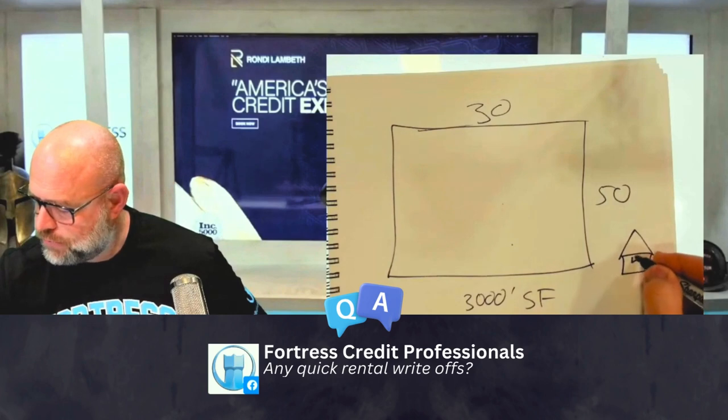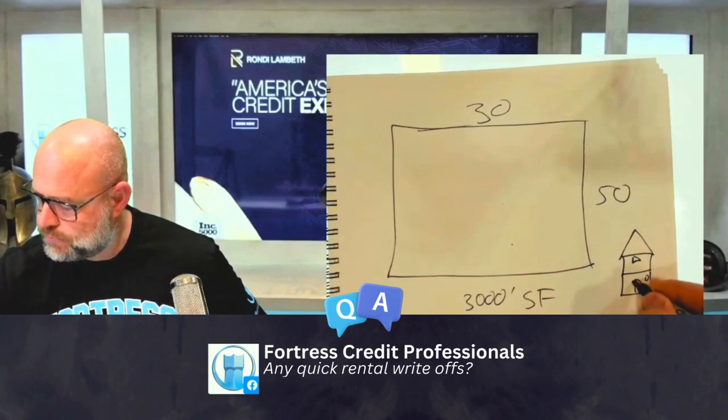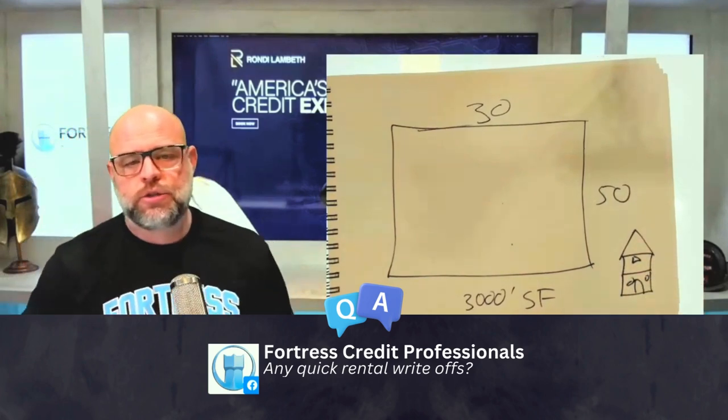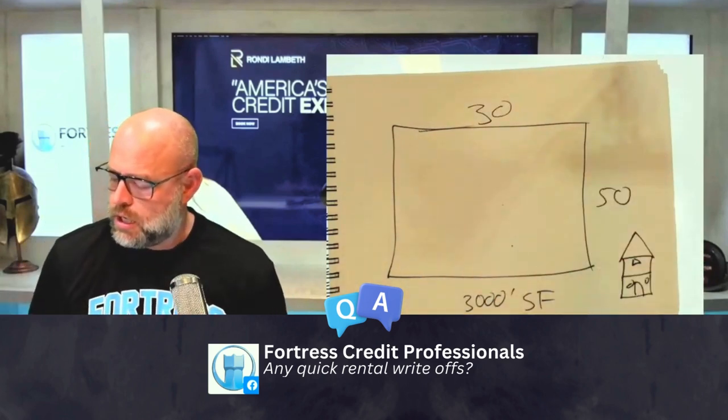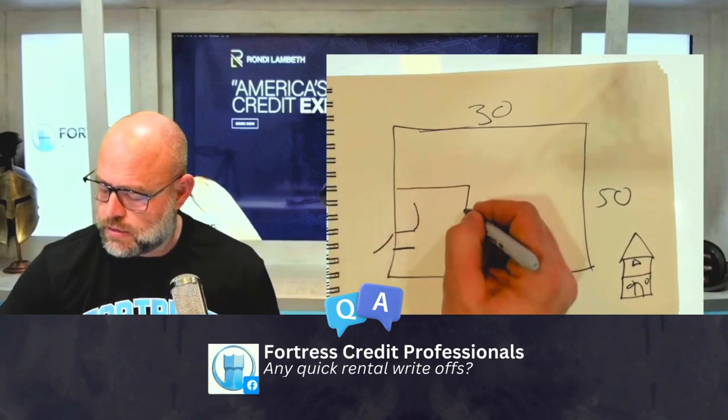One story, two-story house. Two-story house, 30 feet wide, 50 feet, and the front door is right here. I'm just going to draw my last house that I used to rent. So here's the front door and my office was right here. This area here was my old office and it was a 14 by 14 square feet.